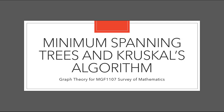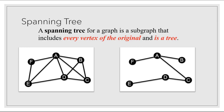In this video, we're going to talk about minimum spanning trees and Kruskal's algorithm. In a previous video, we talked about spanning trees. A spanning tree for a graph is a subgraph that includes every vertex of the original, and it has to be a tree. Here on the left we have the original graph, and on the right we have an example of a spanning tree. It includes all six of the original vertices, it's a connected graph, and it doesn't have any circuits — it doesn't loop back around to itself. So this is considered a tree.